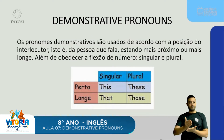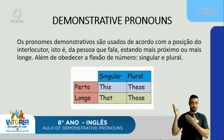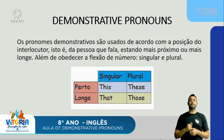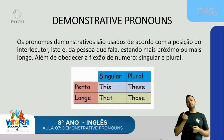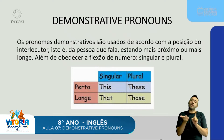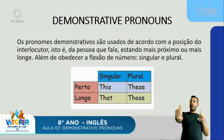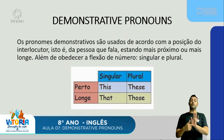Nessa figura temos os quatro demonstrative pronouns utilizados na língua inglesa. Eles são usados de acordo com a posição do interlocutor, ou seja, da pessoa que fala, estando mais próximo ou mais longe. Se o interlocutor está próxima do objeto, o demonstrative pronoun utilizado será um. Se o interlocutor estiver distante, longe do objeto, o demonstrative pronoun será outro.